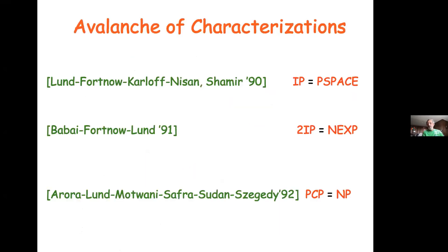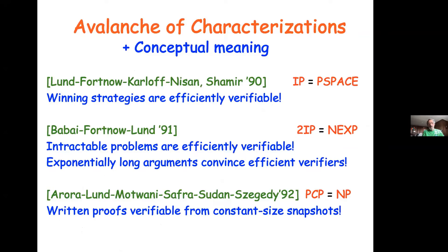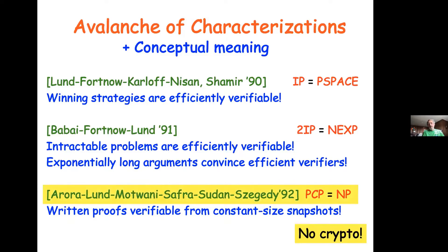Here are the characterizations. I want to stress there's no cryptography in this theorem. We understand the power of IP and MIP. From these results, the understanding became that with a randomized verifier, you can verify long proofs without really looking at them — hardly looking at them. Let me define the notion of PCP, probabilistically checkable proofs.